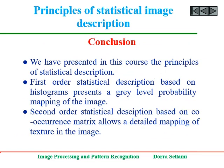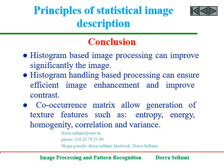In this part of the course, we have presented the principles of statistical description. First-order statistical description, based on histograms, presents a grey level probability mapping of the image. Second-order statistical description, based on the co-occurrence matrix, allows detailed mapping of texture in the image. Histogram-based image processing can significantly improve image appearance, ensuring efficient image enhancement and contrast improvement. The co-occurrence matrix allows generation of texture features such as entropy, energy, homogeneity, correlation, and variance.